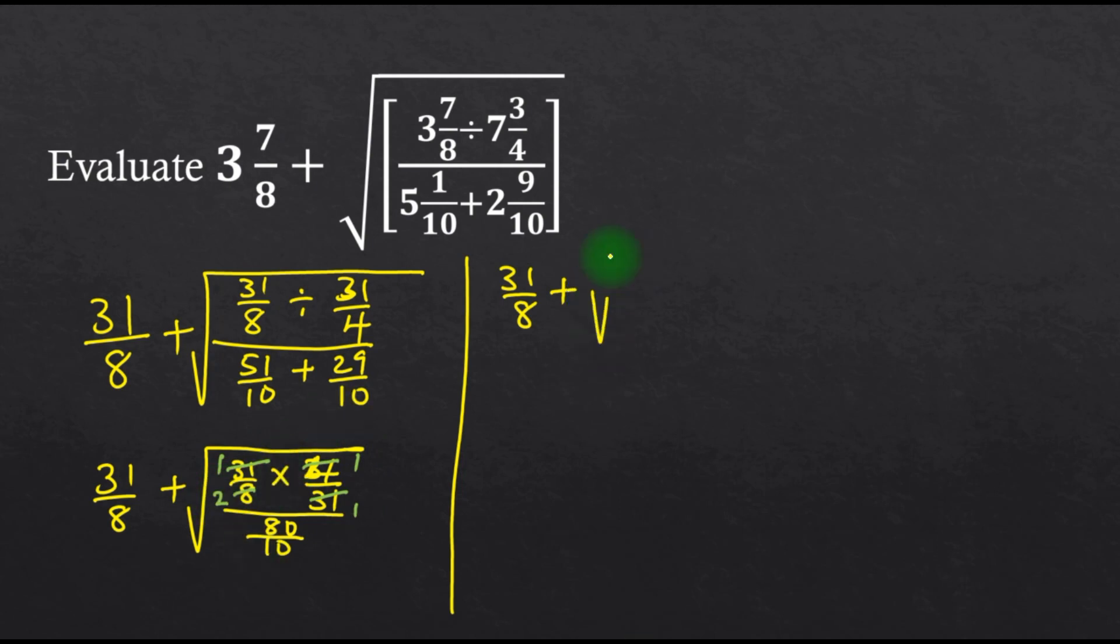So we get 31 over 8 plus the square root of one-half, all over 80 divided by 10, that is 8. Which is the same as one-half times 1 over 8.